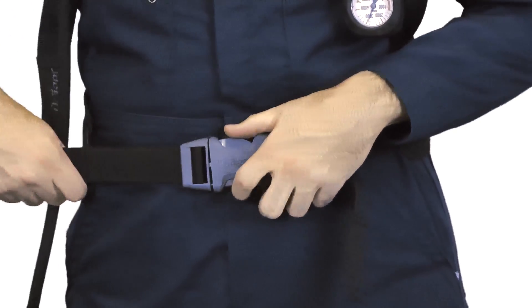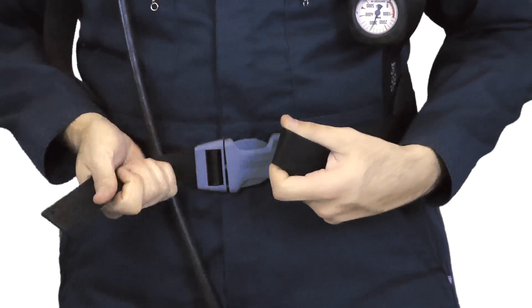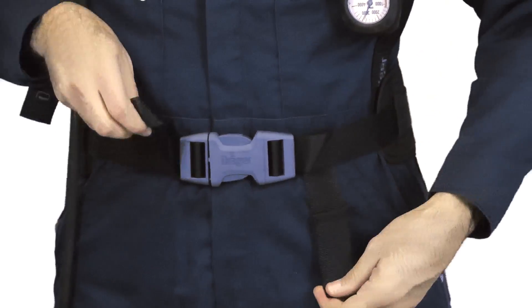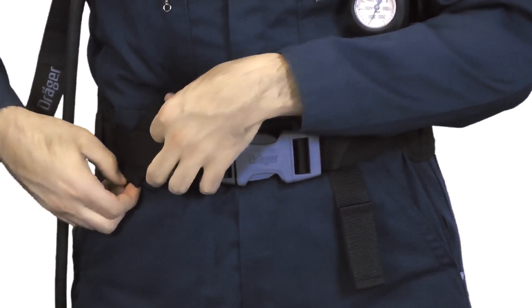Tighten the waist belt by pulling to the side of each of the waist belt straps one at a time. Once tightened, tuck the straps into the waist belt.